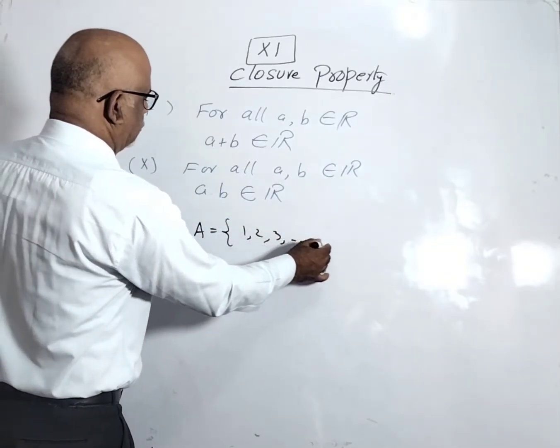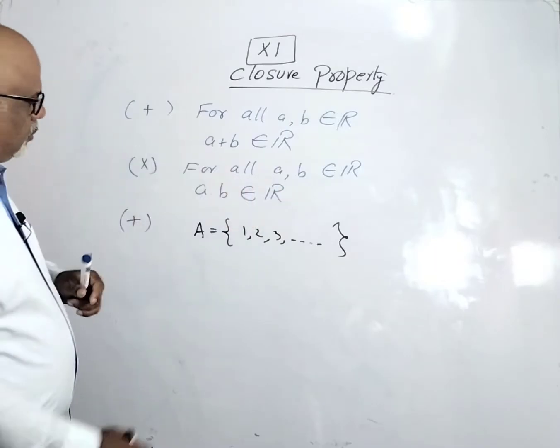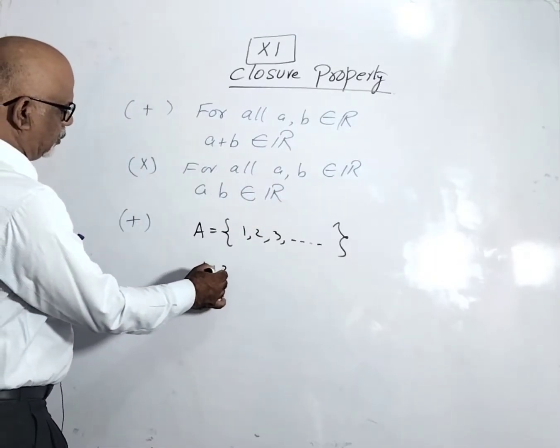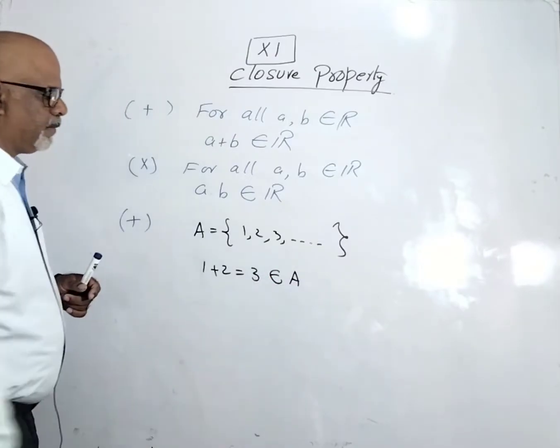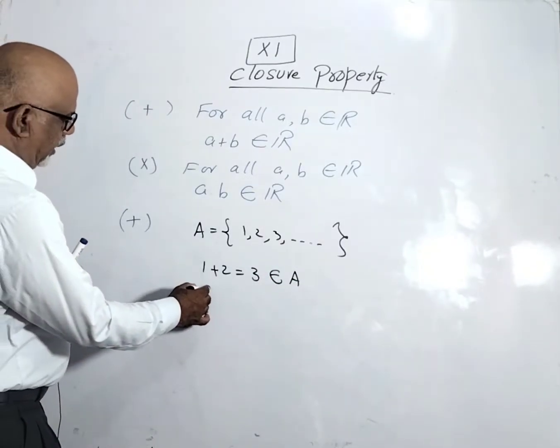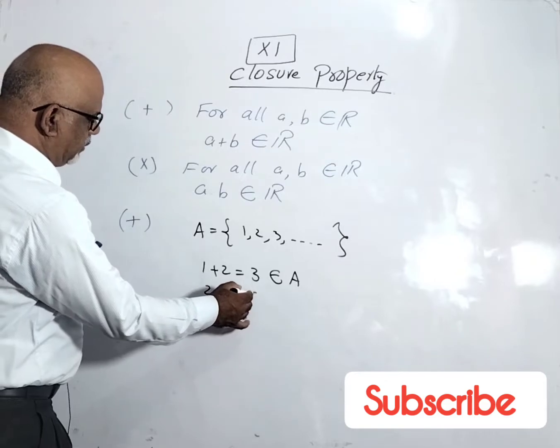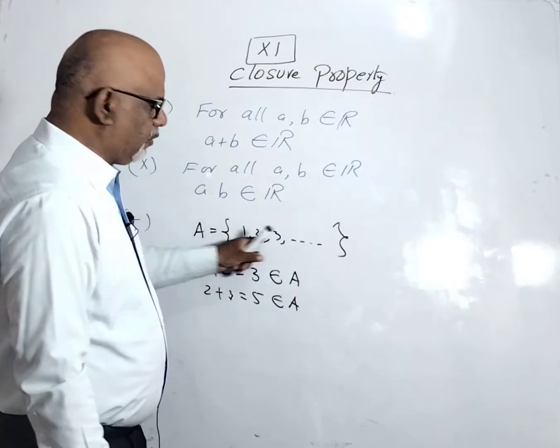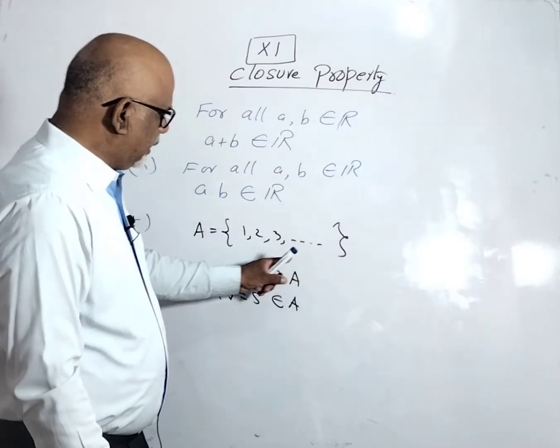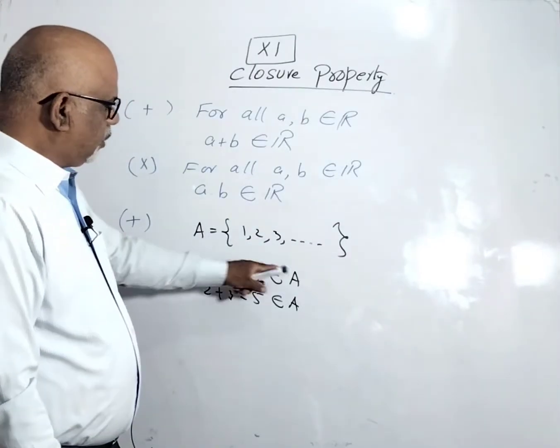If we add 1 plus 2, it equals 3, which belongs to A. 2 plus 3 equals 5, which belongs to A. That means any two numbers when we take from this set, if their result belongs to the same set for all values...